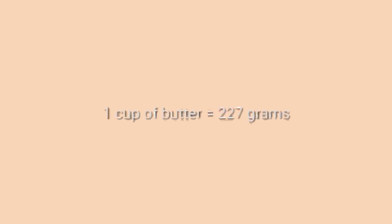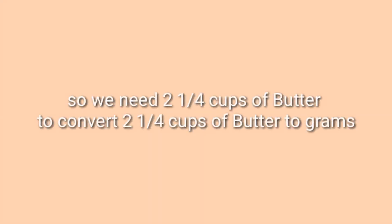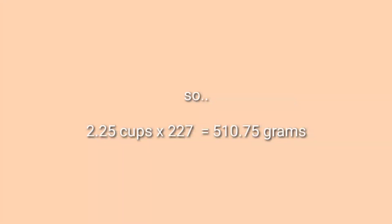Next is butter. To convert cups of butter to grams, 1 cup of butter equals 227 grams. We need 2 and 1/4 cups of butter. So 2.25 cups times 227 equals 510.75 grams of butter.